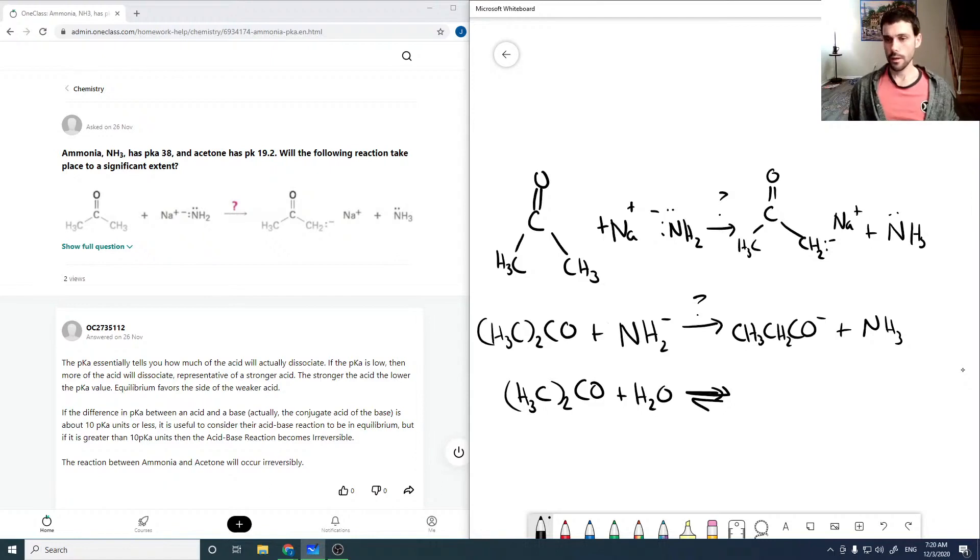Wait, what am I thinking? CH3COCH2 minus plus H3O plus and NH3. So it's giving us our NH3. It's giving us the acid constant for ammonia, not the base constant. So that means we're going to NH2 minus plus H3O plus.